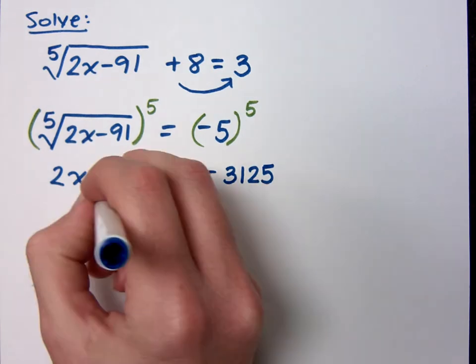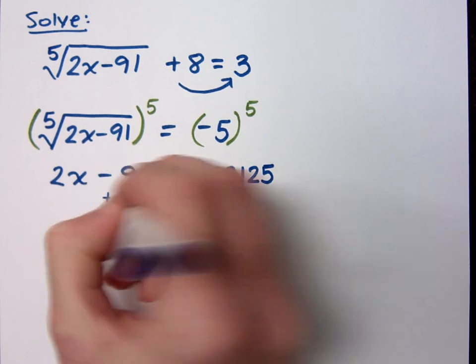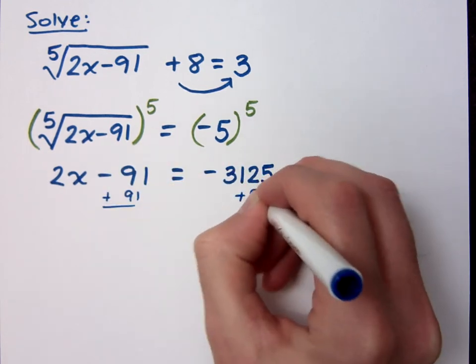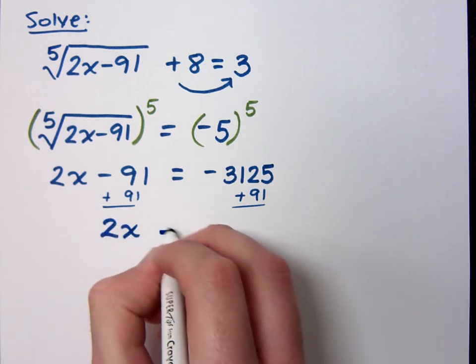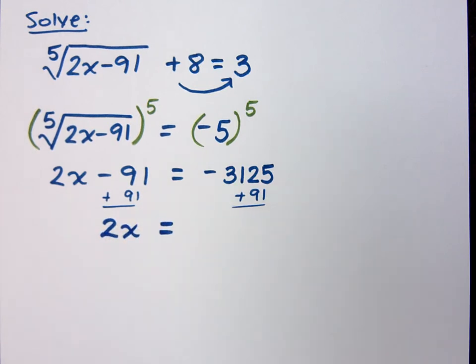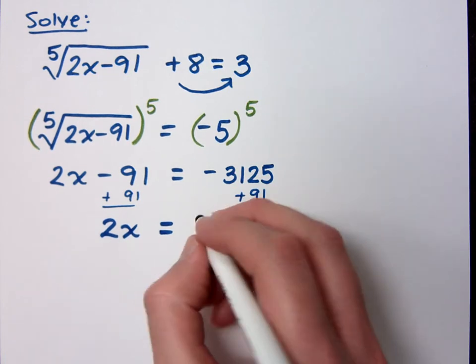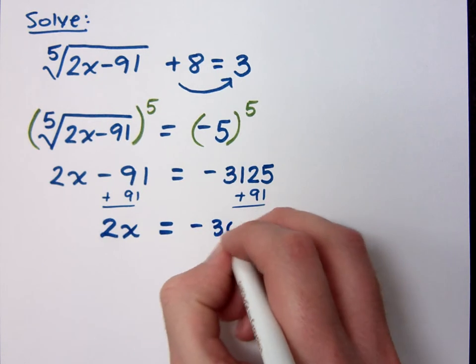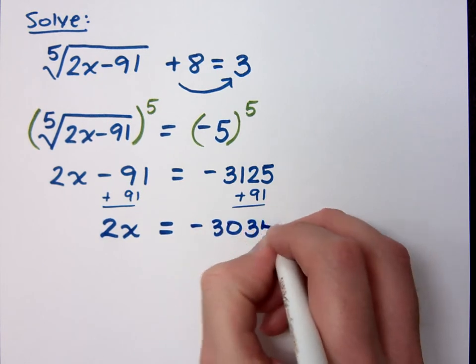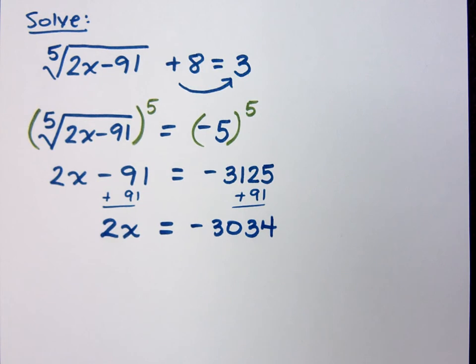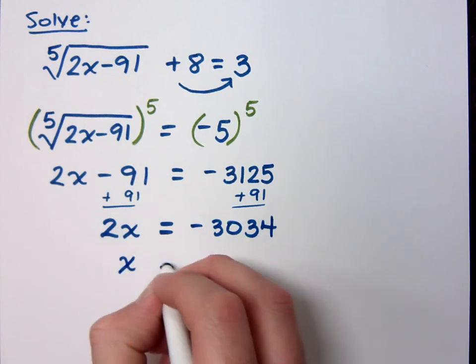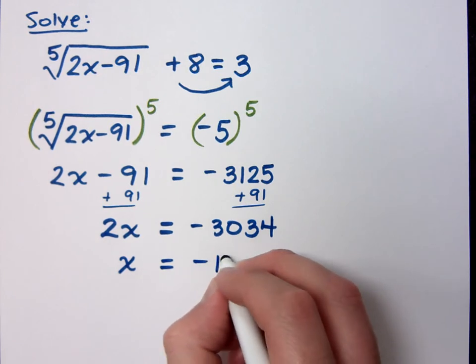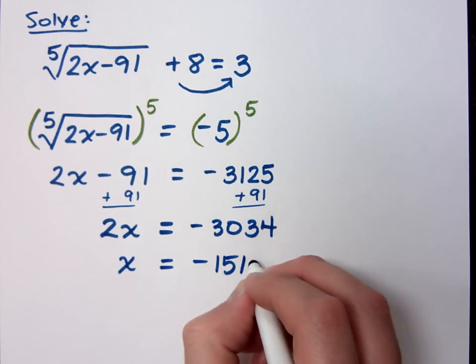Add the 91 to both sides. I'm actually going to show that. Oh, these numbers are so large, it's hard to do mental math anymore. So 2x equals 3,034 negative, right? Do you all agree with negative 3,034? And then when we get x by itself, what do you get? Negative 1,517.